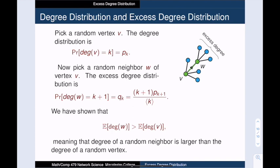In other words, the expected degree of a random neighbor is larger than the expected degree of a random vertex. And this explains why your friends are more popular than you.